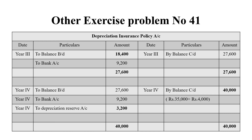For the next year, we bring down the balance to the debit side — balance brought down 27,600 rupees. In the fourth year, we pay the premium amount of 9,200 rupees. Now the insurance policy has matured. At the end, we are getting 40,000 rupees. The balancing figure is depreciation reserve of 3,200 rupees. We paid 27,600 plus 9,200, which is 36,800 rupees total. On maturity we receive 40,000 rupees, so we get a 3,200 rupees profit.